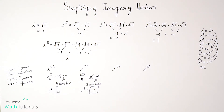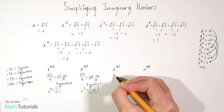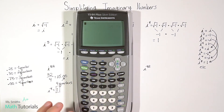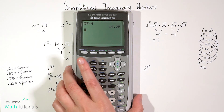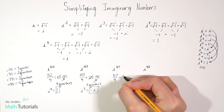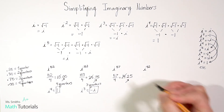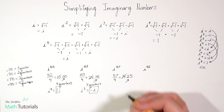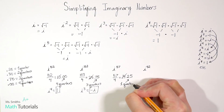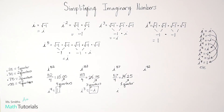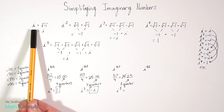Let's try i to the 57th power. Take 57 divided by four, which gives us 14.25. We don't care about the 14 — only the decimal. 0.25 is 25 cents, which is one quarter, and one quarter corresponds to i to the first power. i to the first is just i, so i to the 57th power reduces to i.